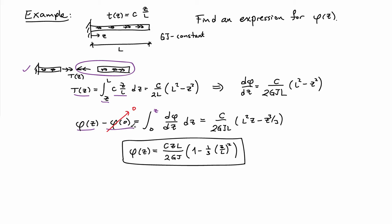That allows me to find what φ(Z) is. Taking advantage of the boundary condition, the bar is built in at Z equals 0, so I know that φ(0) equals 0. That gives me a final result for the rotation, which is this cubic polynomial shown here in this box. That gives me the rotation field, which was the question we were asked.